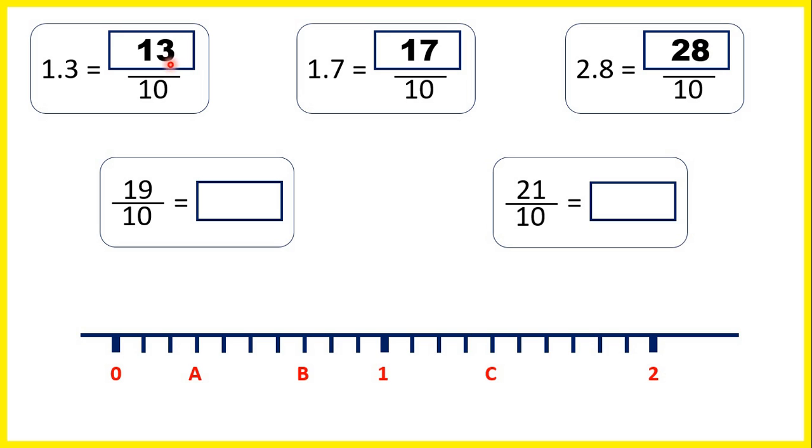And you can see from our answers here that when we're changing a decimal into tenths, we can just look at the digits. So we have 1, 3, 13, 1, 7, 17, 2, 8, 28.